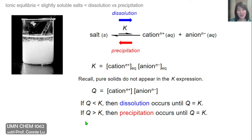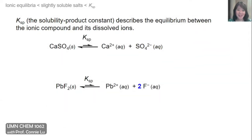On the other hand, if the Q value is greater than K, then that means the concentration of these ions are higher than their equilibrium values. So this reaction would move backwards to the reactant and form the salt. Because we're forming a solid, this backwards reaction is precipitation, which would occur when Q is greater than K. The equilibrium constant that describes the solubility of these slightly soluble ionic compounds, or salts, is called Ksp, where sp stands for solubility product. These describe the equilibrium between the salts in their solid forms and their dissolved ions in the water solution.